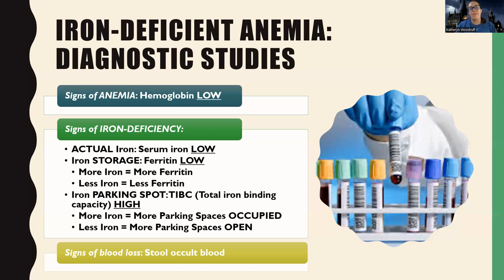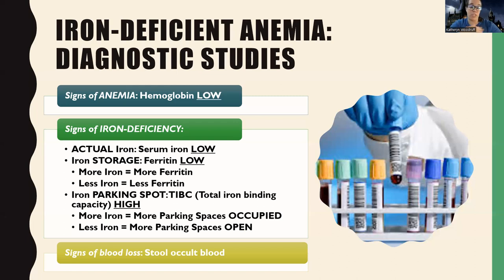So think of TIBC as parking spaces — there will be more spaces available because there's less iron around. Ferritin, on the other hand, works hand in hand with iron; you have to have iron in order to have ferritin. Effectively, everything is going to be low except for the total iron binding capacity, which is going to be high because there are plenty of parking spaces open with no iron to fill them. They may also have signs of blood loss like occult stool, and we'll ask women about their menstrual cycles.